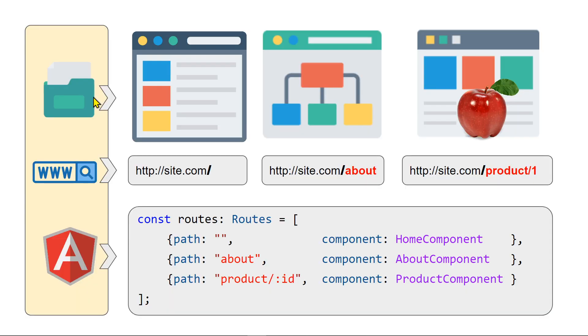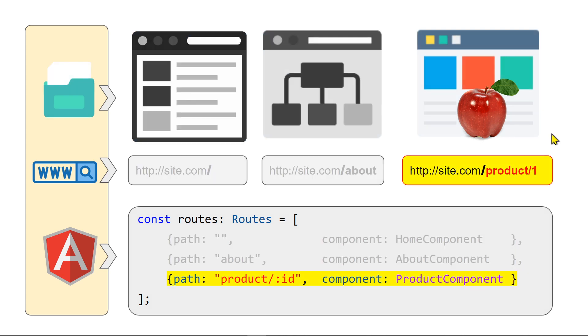Here's an example of a particular route that will take the product ID of 1, and then matching that product ID path on the bottom, how to retrieve that value of 1 from this ID parameter.